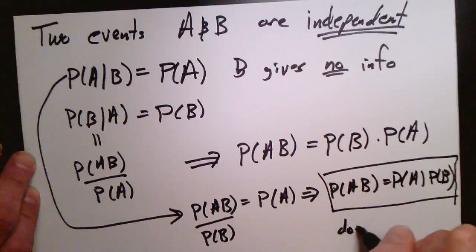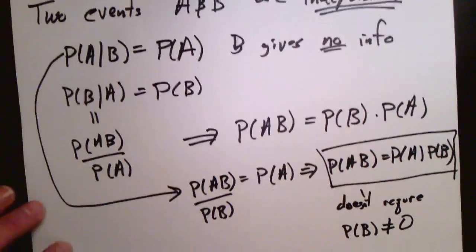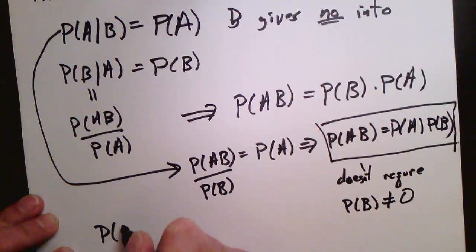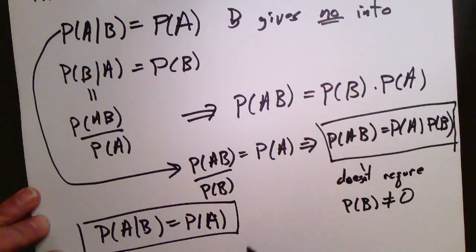Now, this one I've just boxed is usually the definition that's given because it doesn't require that A and B are not zero. It makes sense even if A or B have probability zero. But this definition that I'm running out right now is somehow a lot more intuitive.